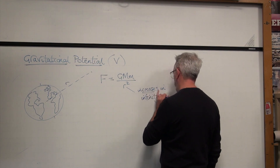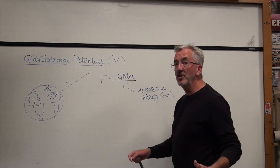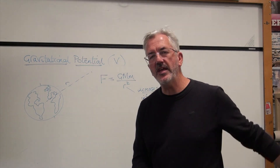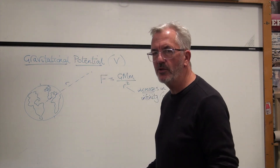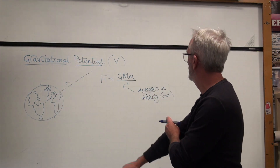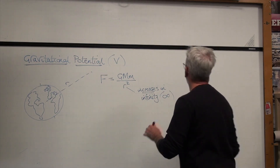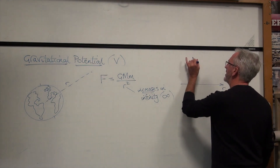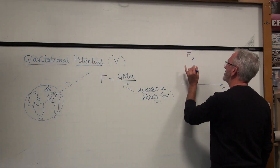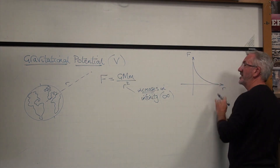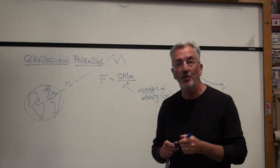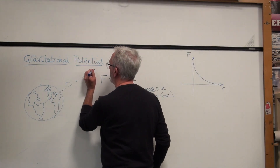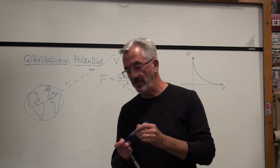Now, we've always got problems in physics with zeros and infinities, because you never actually get to infinity or actually get to zero — it's a mathematical construct. What we can say though is that as the distance increases, as R increases, then that gravitational force decreases and tends to zero, as you would say in maths. So as you approach infinity, the gravitational force decreases to zero.